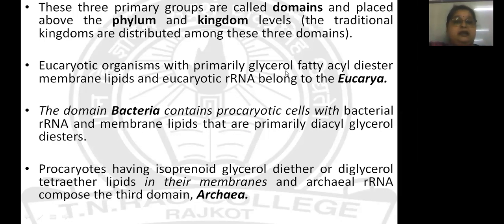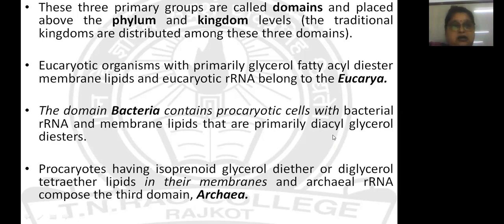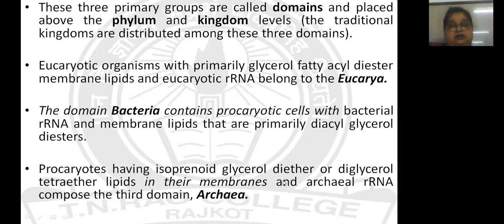There are three primary domains placed above the kingdom or phylum level in classification: eukaryotes, archaea, and bacteria. Eukaryotic organisms have glycerol fatty acid glycerol membranes and eukaryotic rRNA. Bacteria contain prokaryotic cells with bacterial-type rRNA and lipids having diacylglycerol diester in their chemical composition. Archaea are also prokaryotic but quite different from bacteria — they have archaeal rRNA with different conserved sequences, and their membrane has diether linkage rather than ester linkage between glycerol and fatty acids. These are the two key features separating bacteria and archaea.